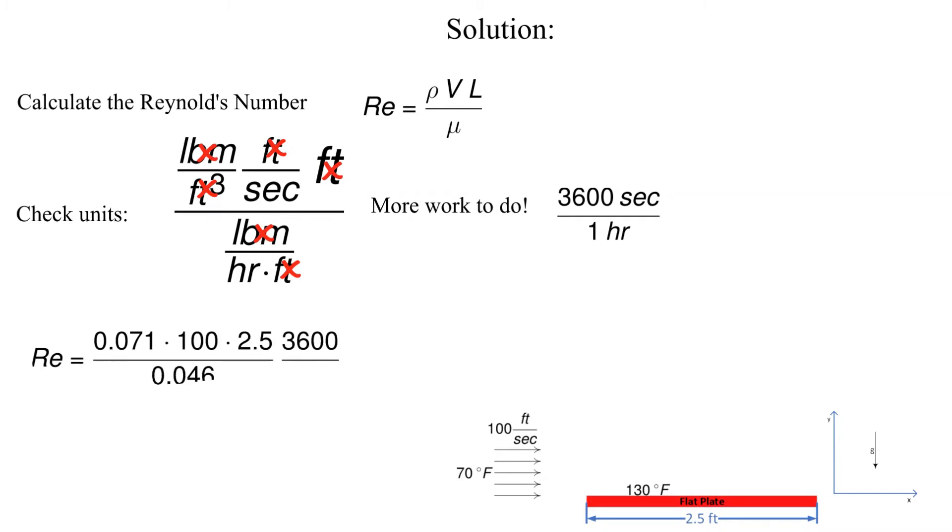The Reynolds number is 1.39 times 10 to the 6 which indicates that at the end of the plate there will be turbulent flow.